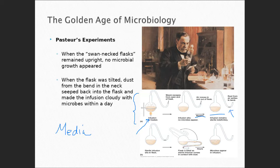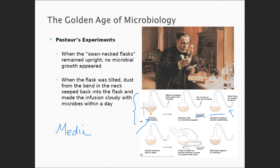He noticed dust accumulating where the gooseneck flask formed that little curvature. Dust is particles — skin cells. The skin cells have microbes on them, and we're all like Pigpen from Peanuts. There's stuff coming off of our bodies all the time — we sweat, skin exfoliates and sloughs off. When those dead skin cells fall away, they act like a magic carpet because they have microbes on them, and these magic carpets can travel throughout the area carrying organisms with them.